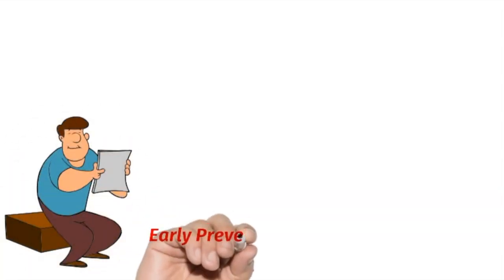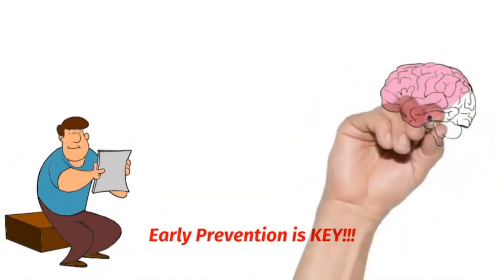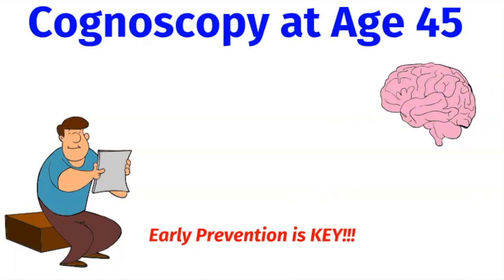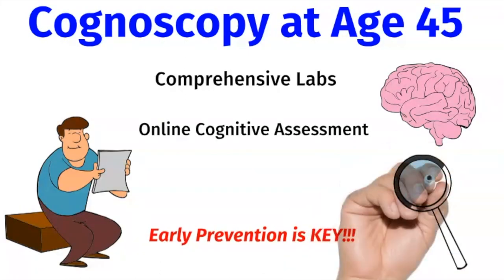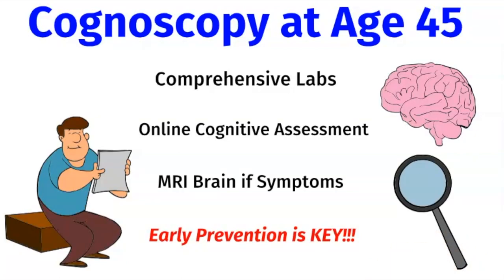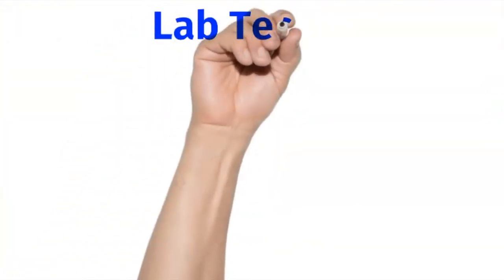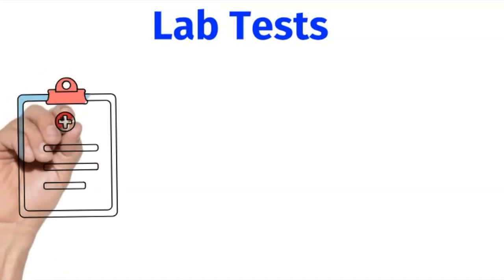So how can we prevent Alzheimer's? Early prevention is key, so Dr. Bredesen recommends that everyone get a cognoscopy at the age of 45. This entails a very comprehensive set of labs, an online cognitive assessment, and then an MRI of the brain only if there are symptoms. The comprehensive labs that are recommended as part of the cognoscopy are very similar to the labs I typically order for all of my patients in my integrative medicine practice.